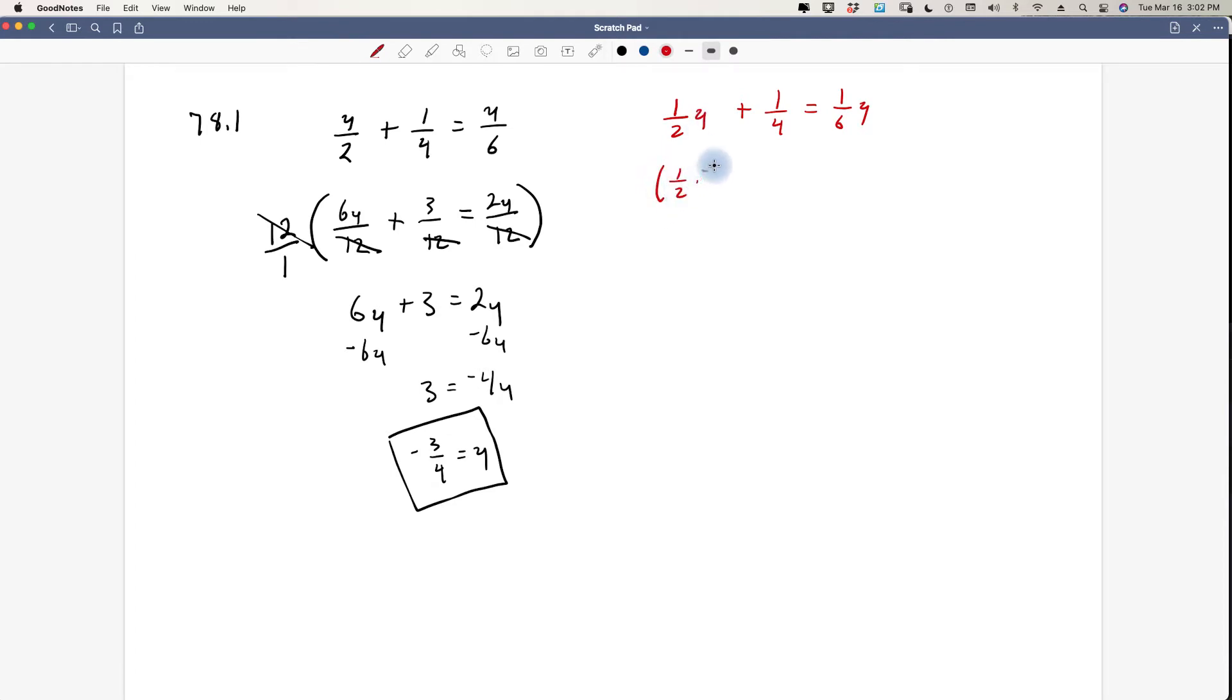So now we can sub in negative 3 fourths for y. So we do that here, and we do that here. And so we have negative 3 eighths plus one fourth equals negative 3 over 24. We can reduce this because 8 times 3 is 24, so this becomes negative one eighth. This needs to bump up the denominator, so we can turn this into two eighths. Negative 3 and positive 2 leaves negative one eighths, and that equals negative one eighths.